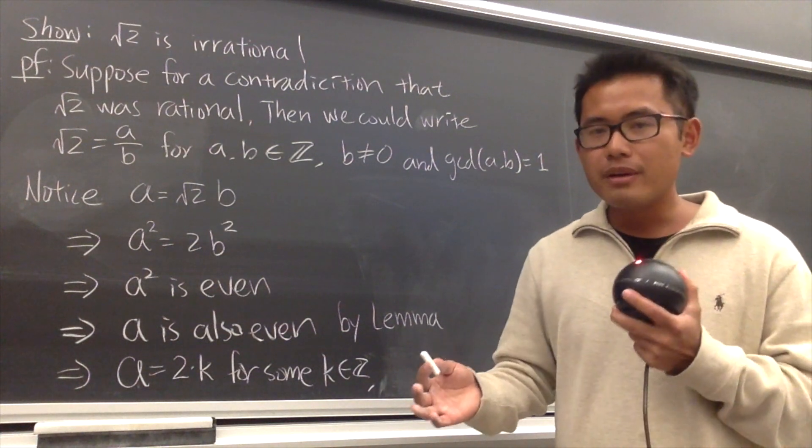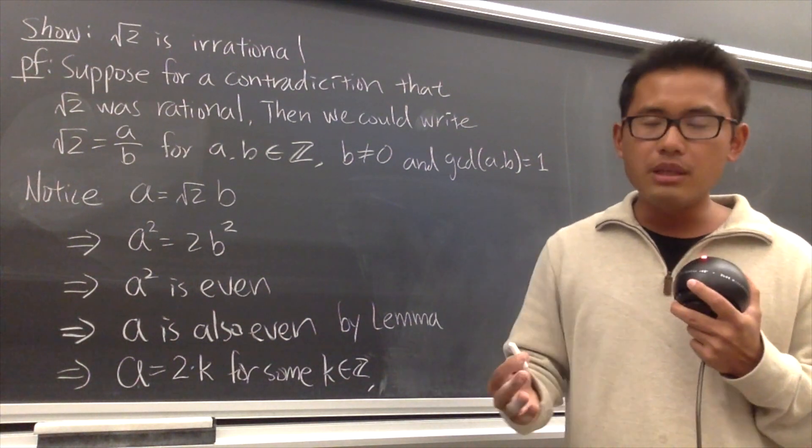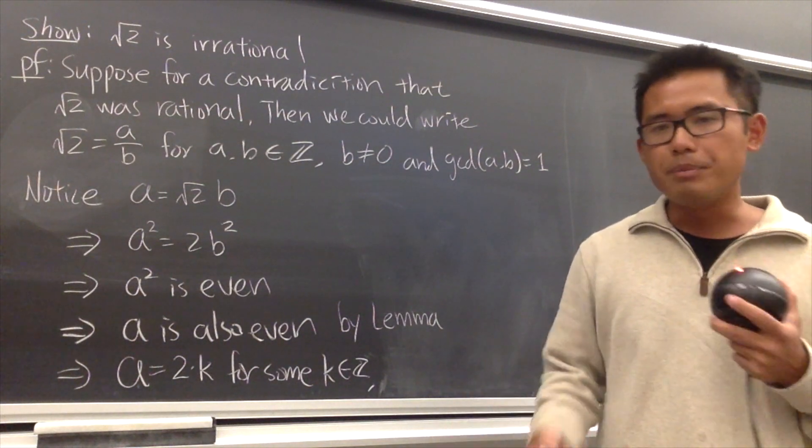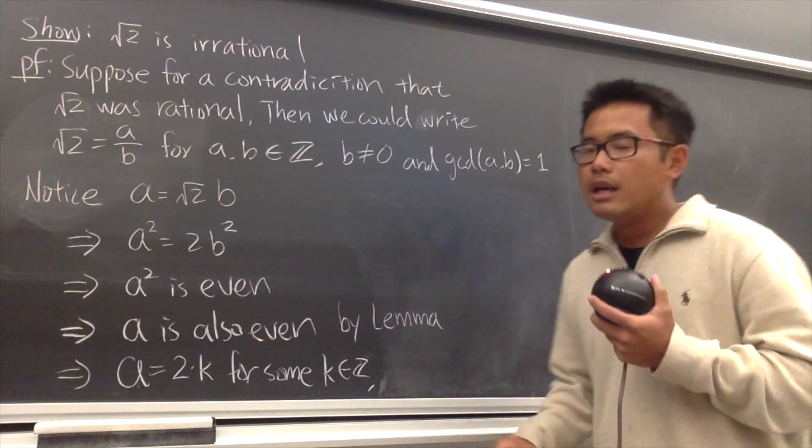A rational number is a number that you can write in the form of a over b, and both a and b are integers. And b cannot be 0 because it's on the denominator.